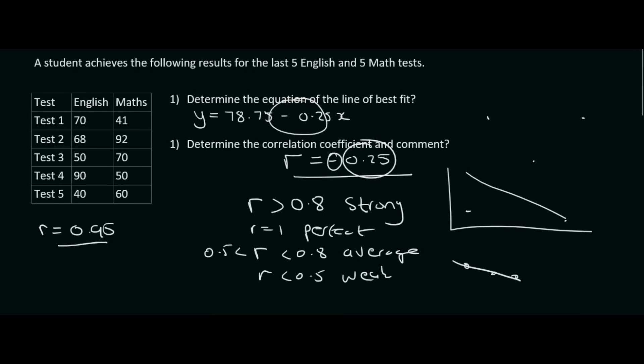And it makes sense. I mean, in test 1, they got 70% for English, but only 41% for maths. Then, on test 4, they got 90% for English, but then only 50% for maths. Then, on test 2, they got 92% for maths, but only 68%. You see, so there isn't really a clear relationship happening over here. And that's why the r value is so small.